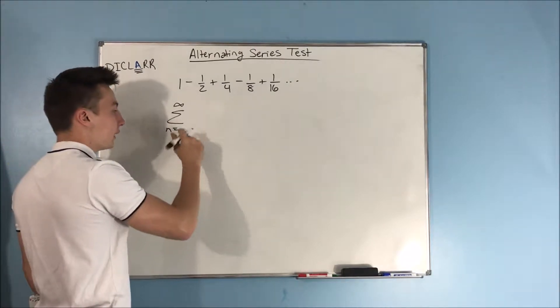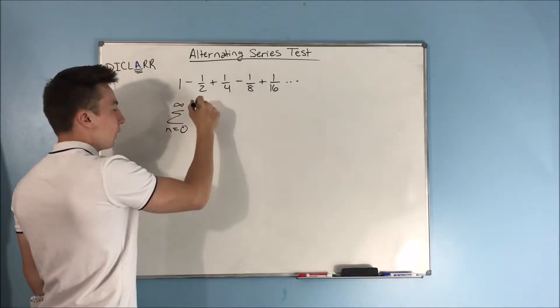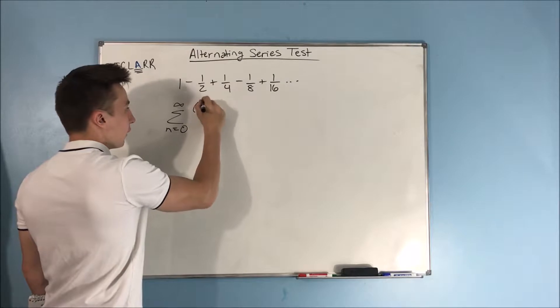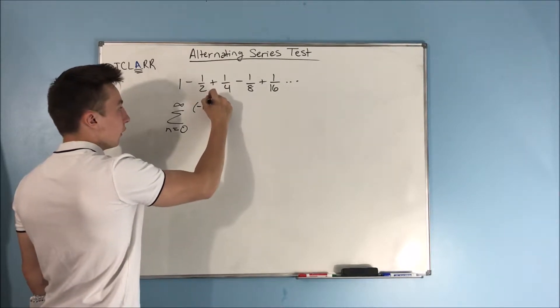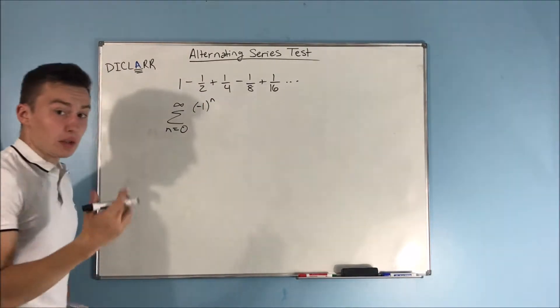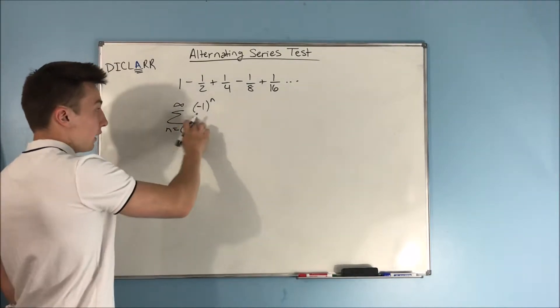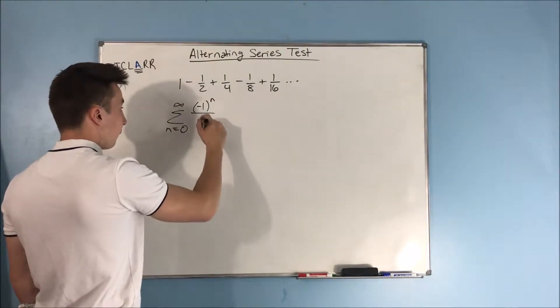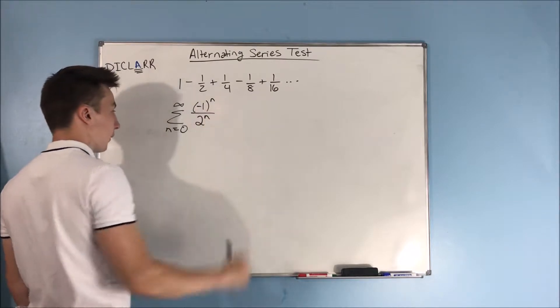Because then we can do just a negative 1 to the n. That's how we get an alternating sign. We do that negative 1 to the n, that's going to come back for this test. And then we have 2 to the n on the bottom.